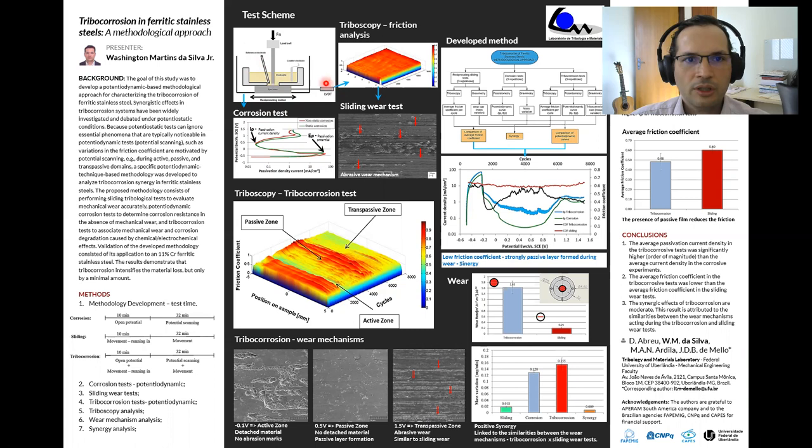This system was improved using special instrumentation for recording the history of friction coefficient during the test. It is called triboscopy. It gives us the information of friction coefficient in each position of the sample along the test.